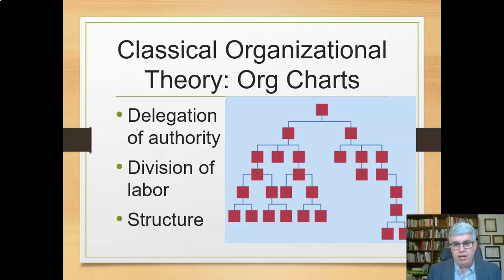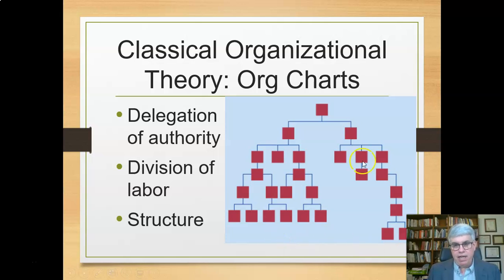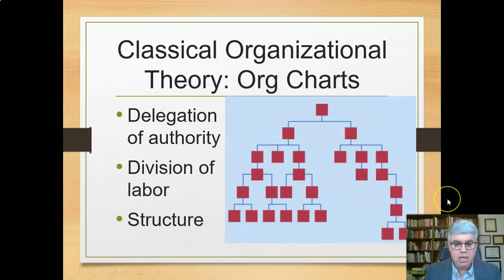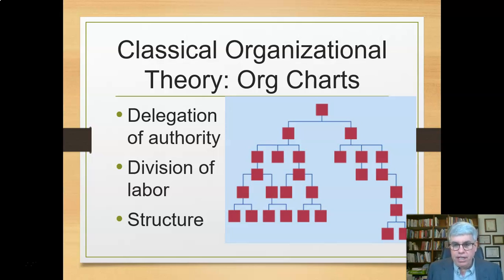You've probably seen org charts. The boxes represent individuals and the lines represent who they're in charge of or who's in charge of them. Here we've got the CEO at the top, maybe two vice presidents — this vice president is in charge of all these people, and this vice president is in charge of all of these people. We've got delegation of authority: the CEO delegates some authority to each vice president, who delegates further down. There's also division of labor — people at the bottom are doing different things from people at the top, and one group is doing something different from another. Another characteristic is structure: if we need to add or remove a person, they can fit into the organization through these lines of authority and division of labor.